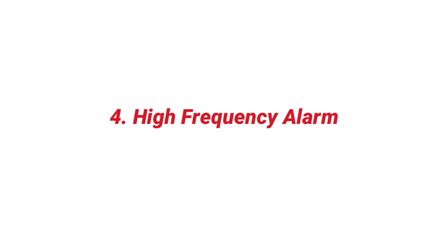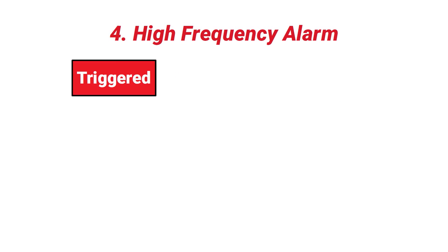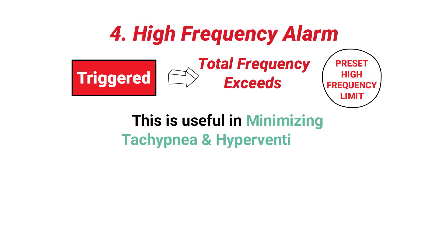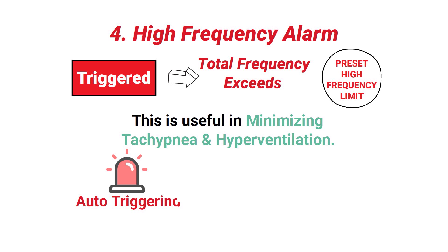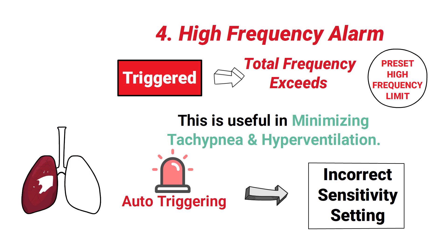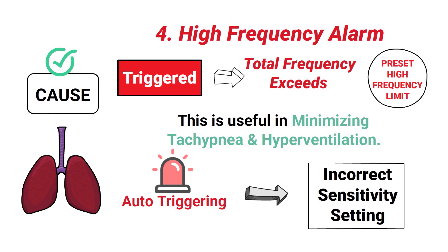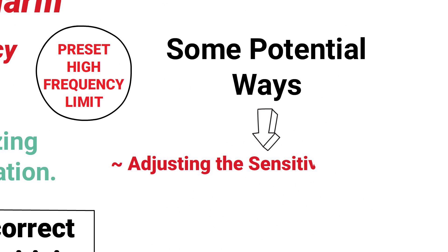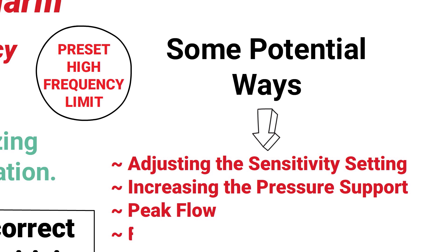The next alarm is the high frequency alarm. A high frequency alarm in mechanical ventilation is triggered whenever the total frequency exceeds a preset high frequency limit. This is useful in minimizing tachypnea and hyperventilation. This alarm can be activated whenever auto-triggering is present due to an incorrect sensitivity setting, or it can be a sign of respiratory distress. Potential corrections include adjusting the sensitivity setting and/or increasing the pressure support, peak flow, or FiO₂.